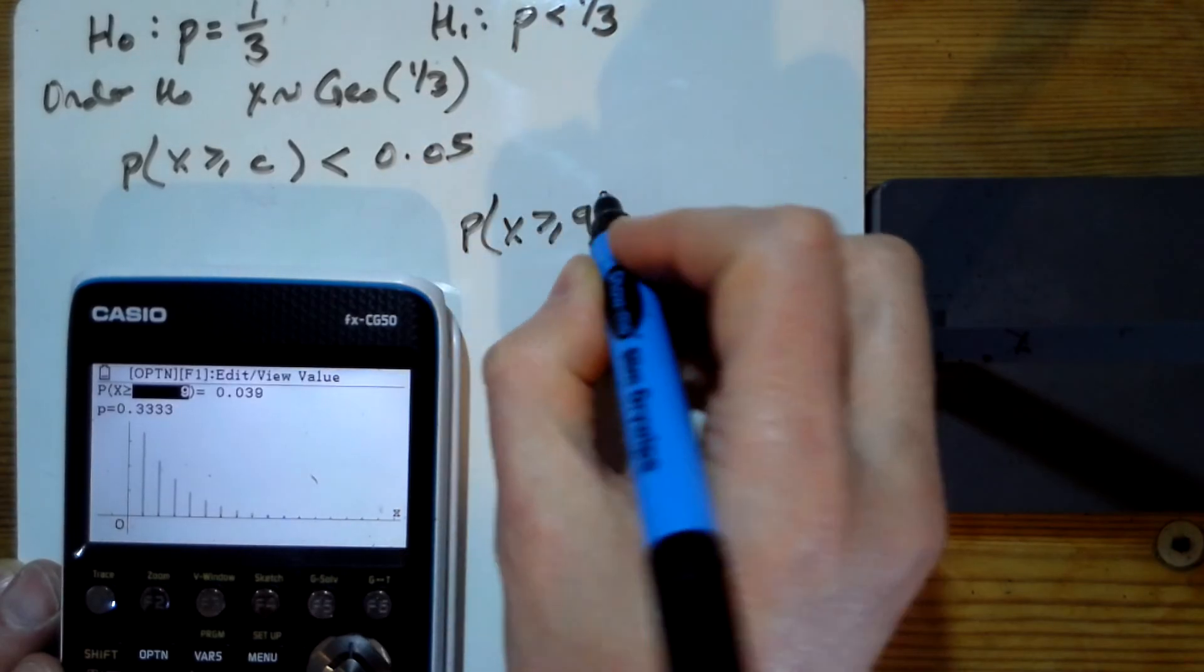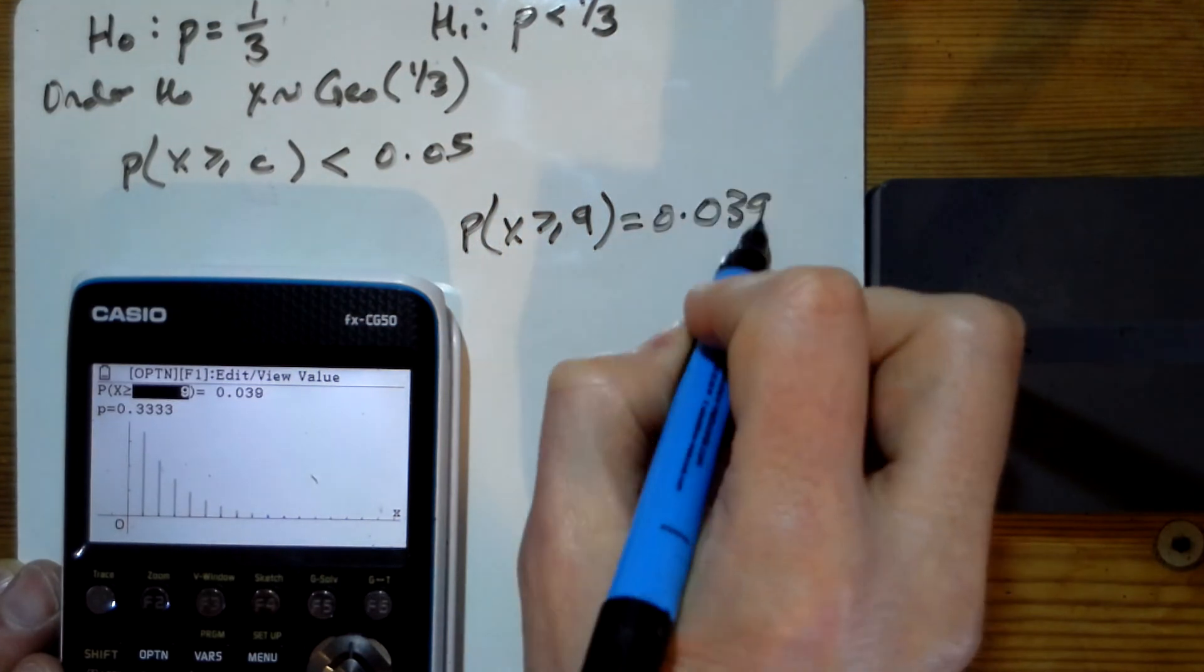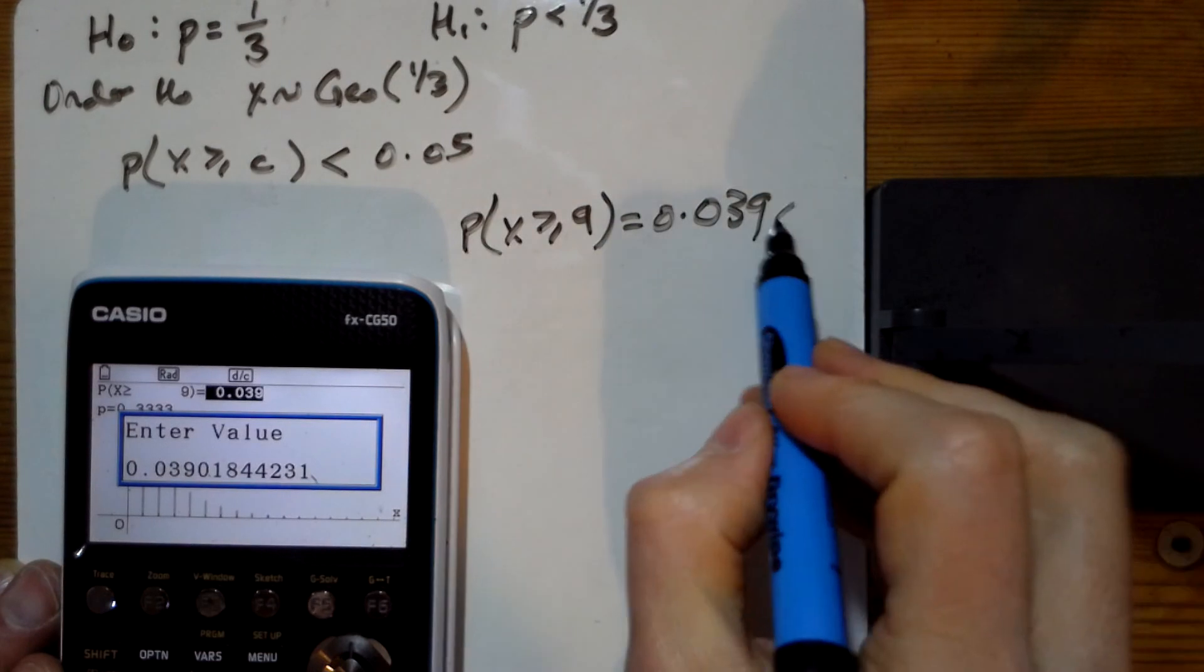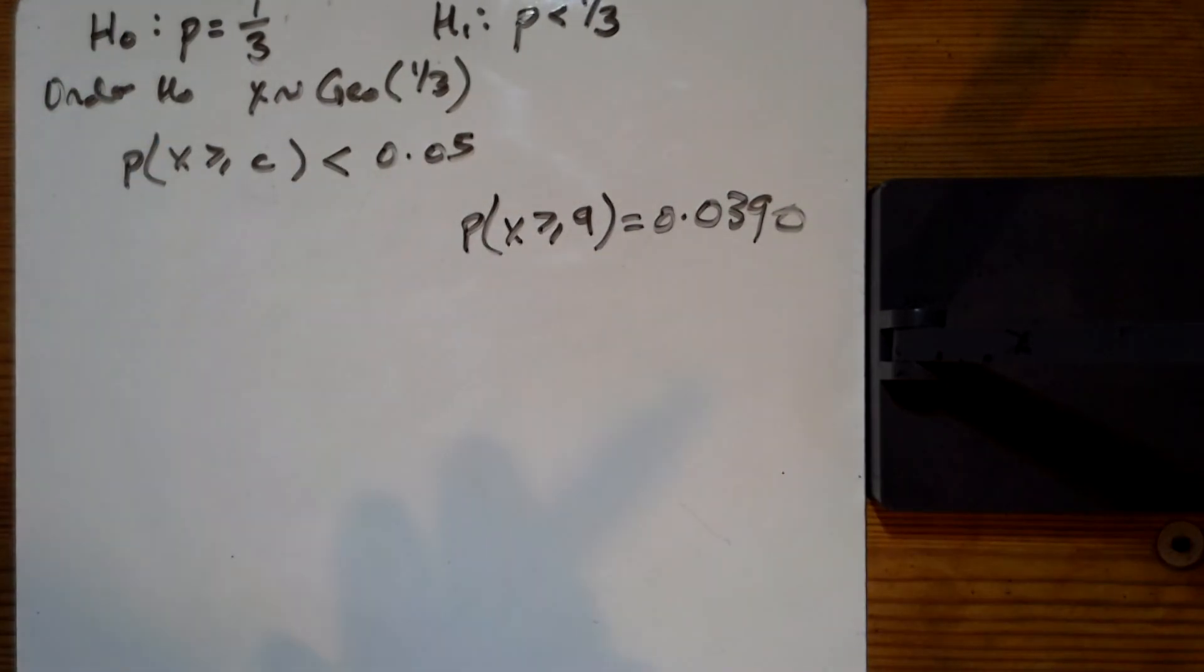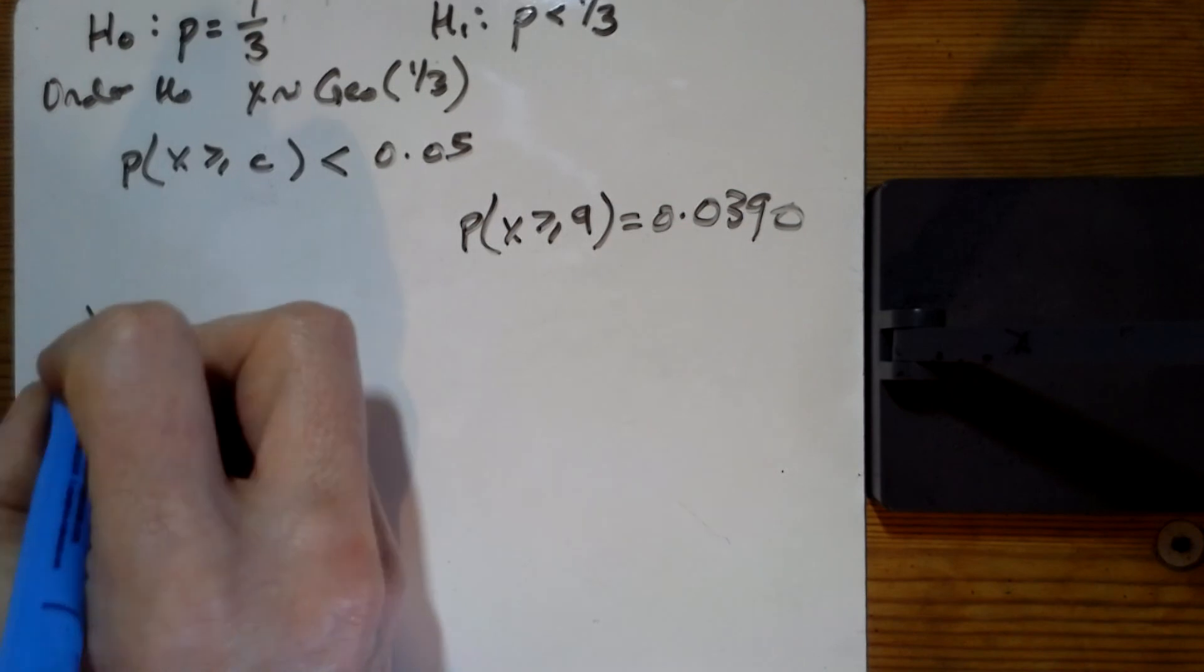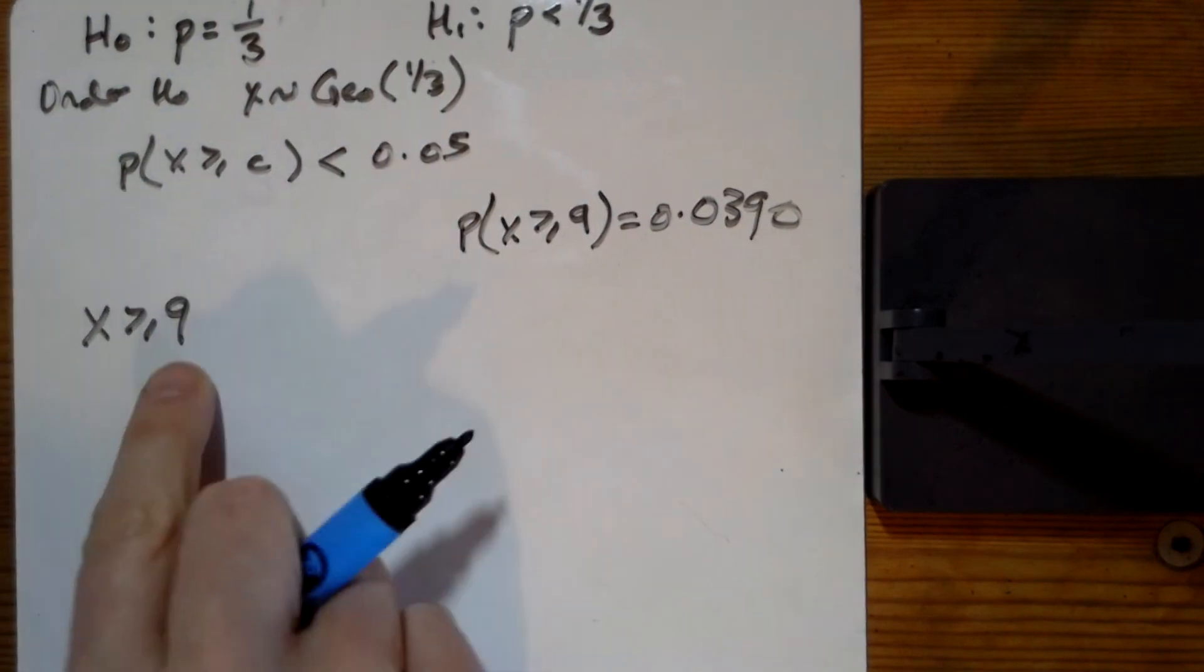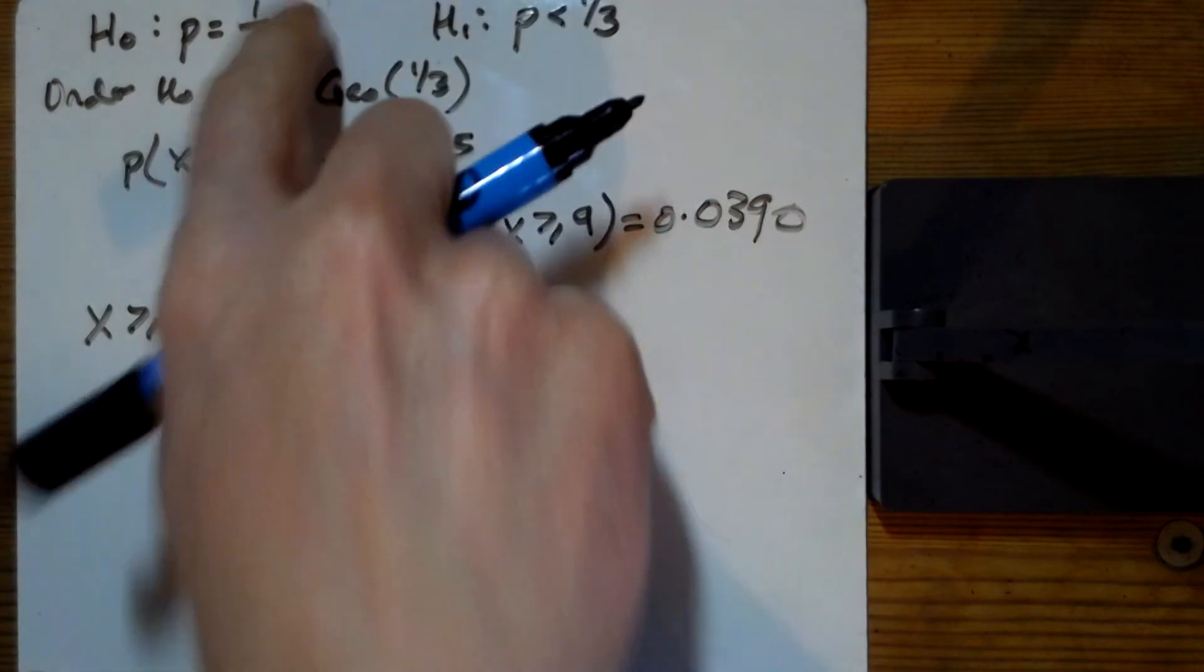So X is greater than or equal to nine equals 0.039. Should we look at what that is? 390. OK, so what's the question? Find the critical region. The critical region is X is greater than or equal to nine. If Dot takes nine goes or more, you would say she was exaggerating this.